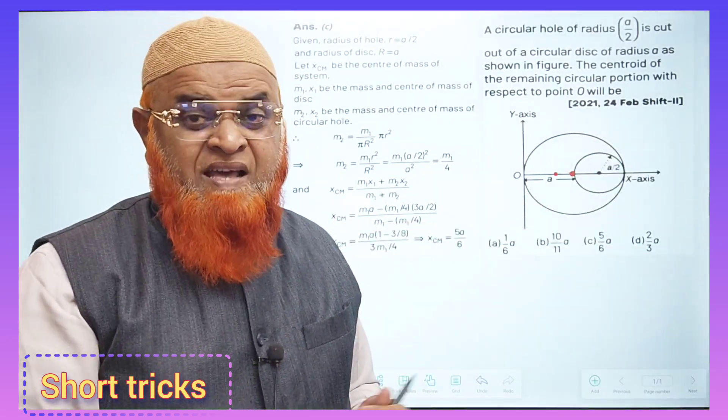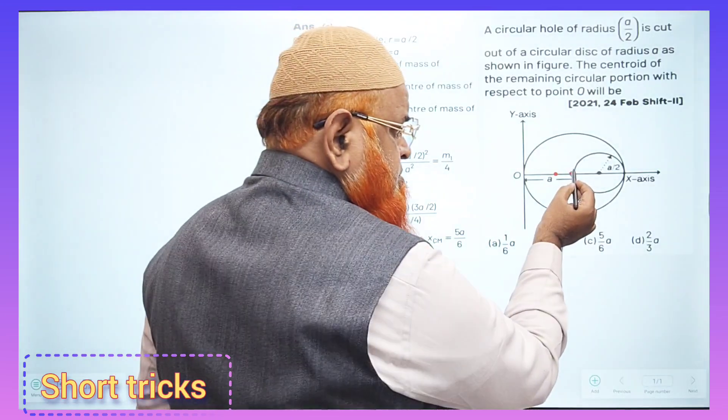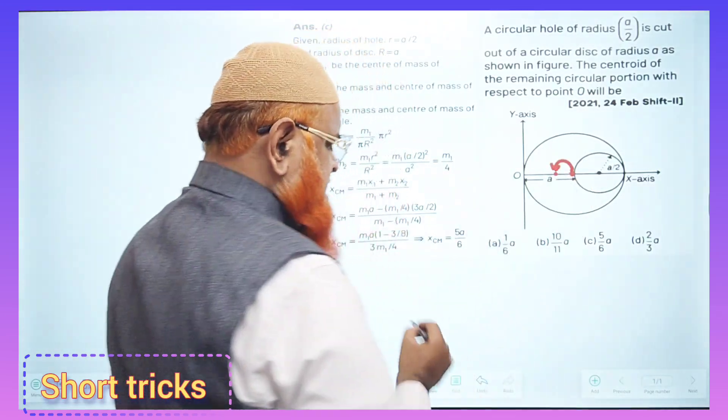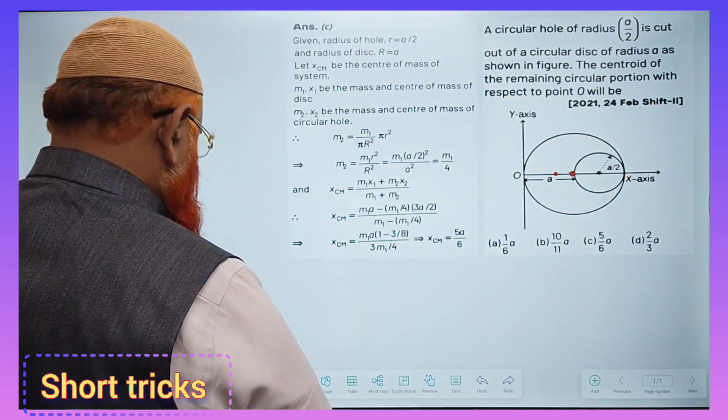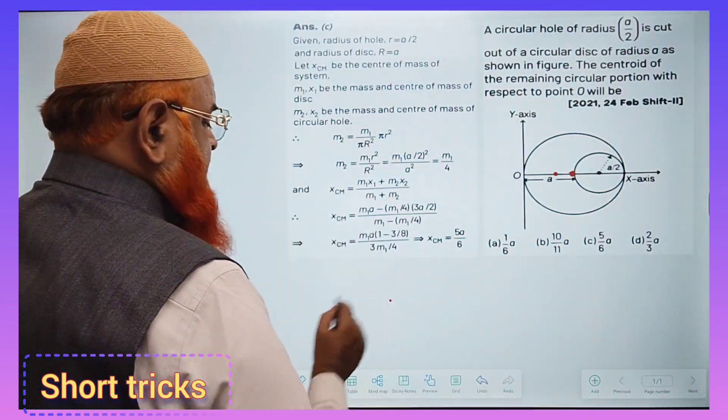Whenever you remove this smaller disk of radius a/2, there is a shift of center of mass from here to here. The center of mass is getting shifted. Let us see what happens and what is the shortcut formula for that.